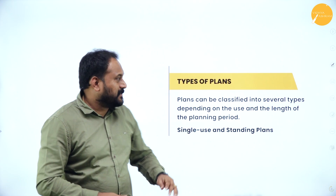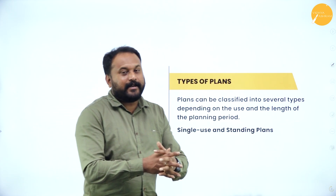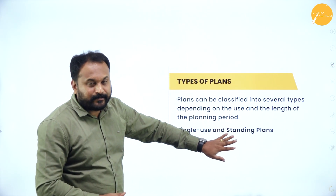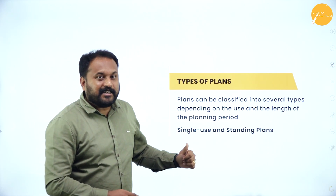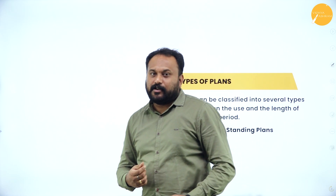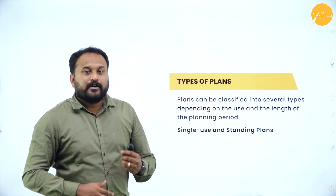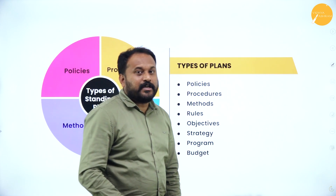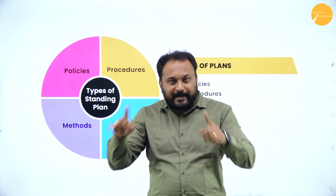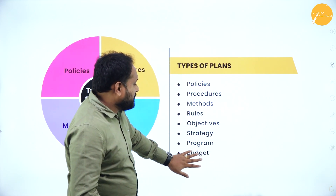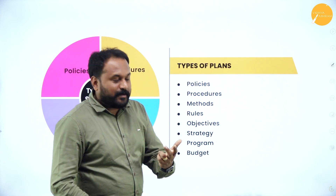The last topic is types of plans. We know there are single use plans and standing plans. A single use plan is used only once — the best example is a budget. A standing plan is routine — every day you do the same kind of thing. Apart from that, we have types of plans in a pyramid structure. To remember them, draw a triangle and make eight tiers. The mnemonic to remember is O-S-P-P-M-R-P-B.